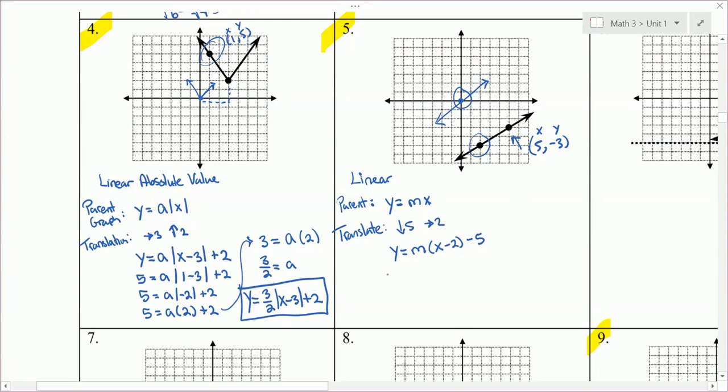I'll show you that this works. Negative 3 equals m times 5 minus 2 minus 5. These parentheses give you m times 3 minus 5. Just as we said in number 4, do not do 3 minus 5, because the 3 is multiplied with m and we can't subtract before we multiply. What we do here is add 5 to both sides and get 2 equals m times 3. Then divide by 3 and you get m is 2 thirds. Our final answer is y equals 2 thirds times x minus 2 minus 5.